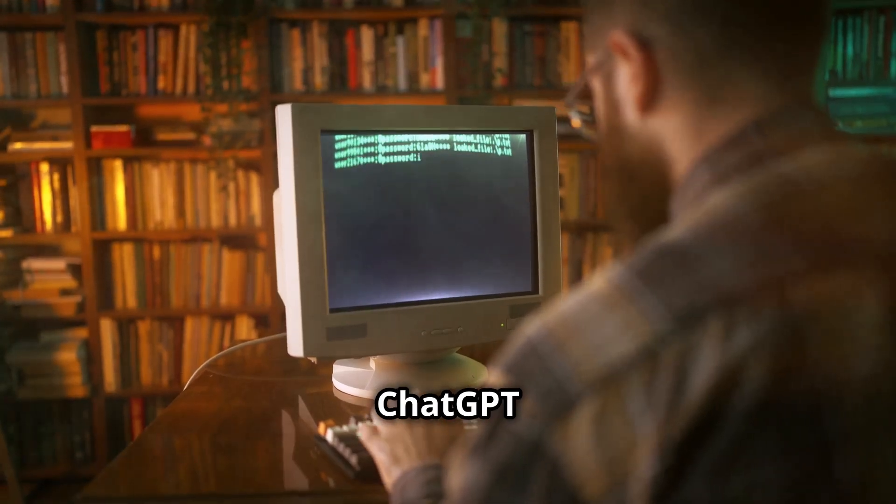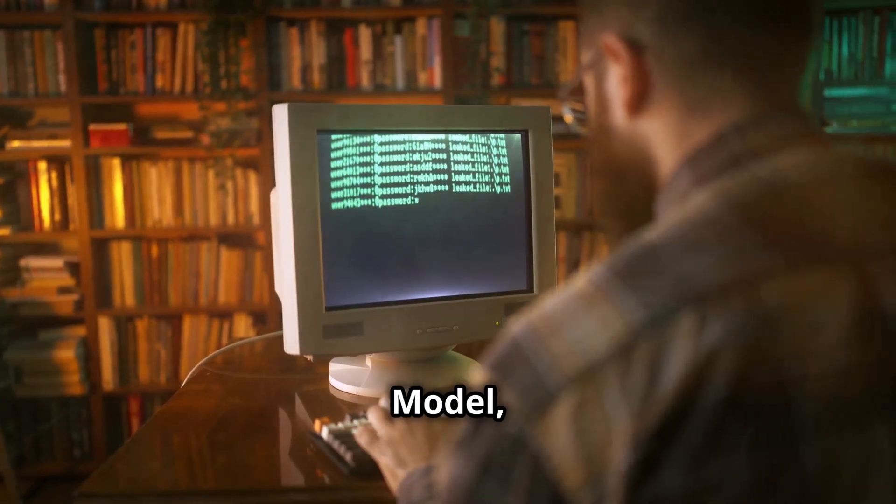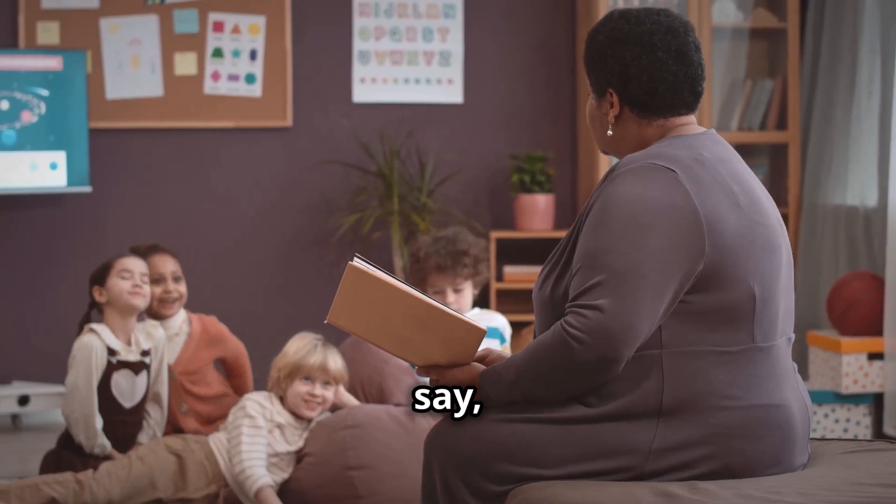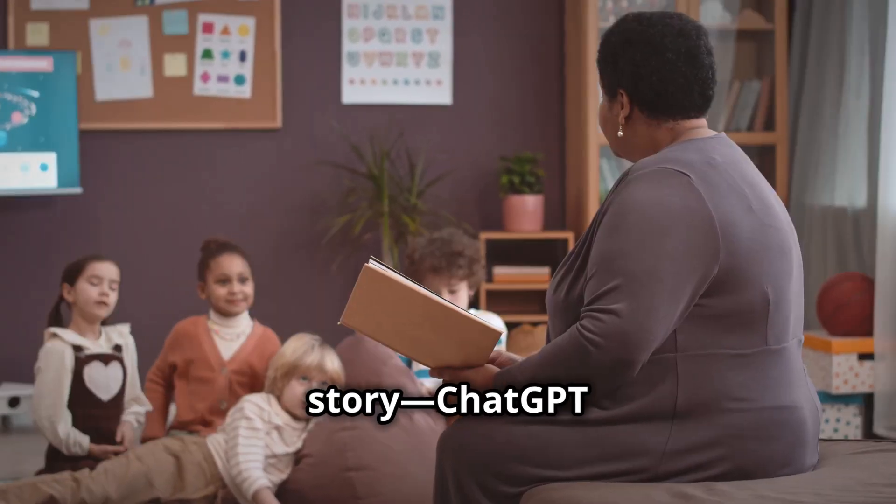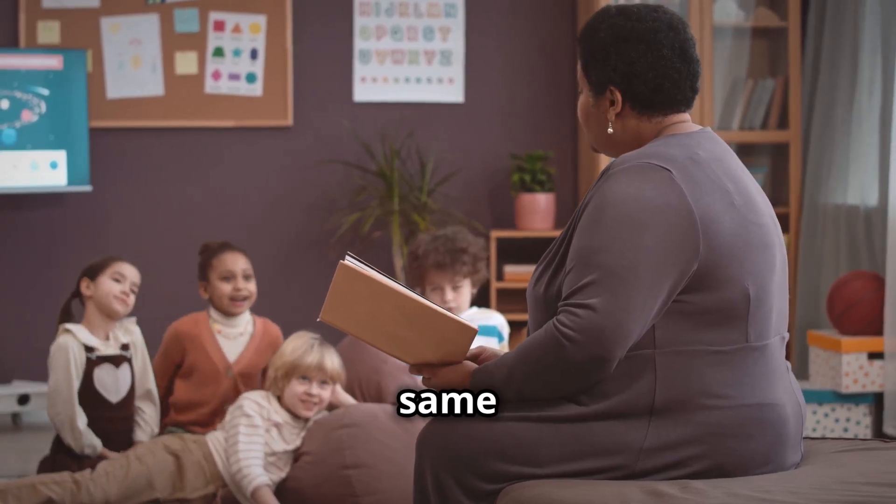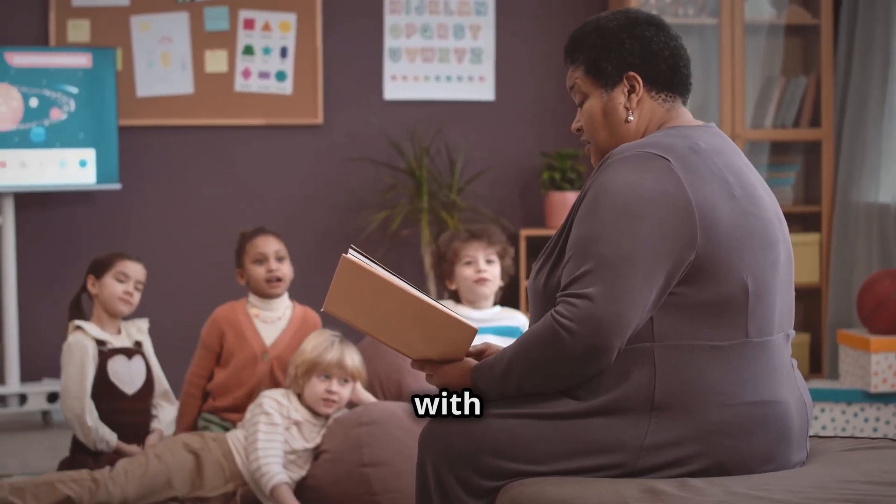The magic behind ChatGPT lies in something called a Large Language Model, or LLM. Think of it as a super-intelligent text engine that has read an enormous amount of information and learned how to predict the next word in a sentence. For example, if I say once upon a time, you'd expect the next words to involve a story. ChatGPT works the same way, but at a much larger scale and with more precision.